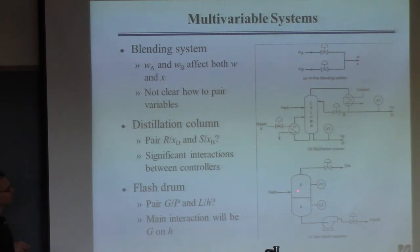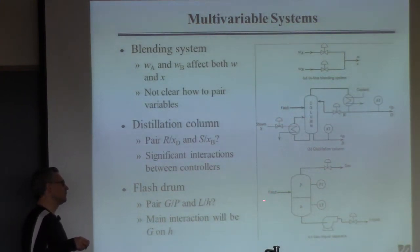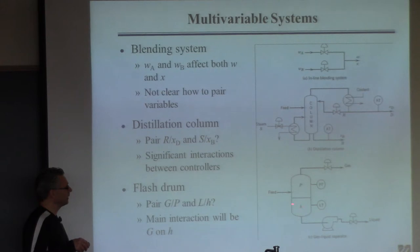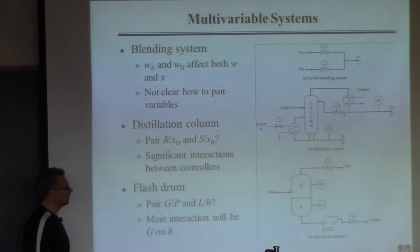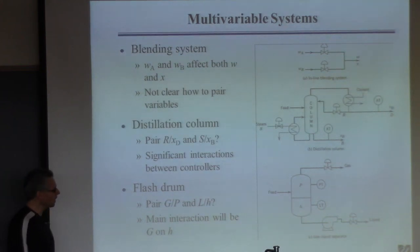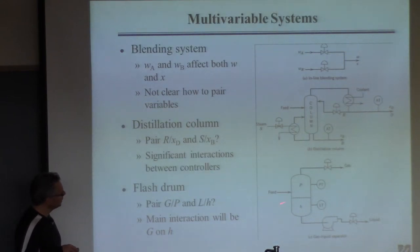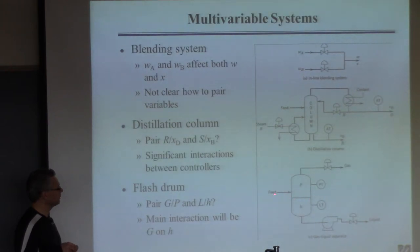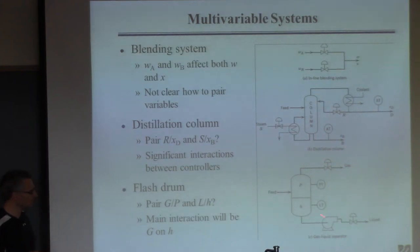For a flash drum — where you heat a stream, expand it into a drum, and create vapor and liquid — you want to control the pressure, because pressure affects the VLE of the separation, and also the liquid level, to maintain inventory. You can manipulate the gas and liquid flows coming off the drum. Intuitively, the gas flow has a more direct effect on pressure, and the liquid flow is the direct way to control level. However, changing the gas flow will also affect the liquid level through VLE, causing interaction between controllers.